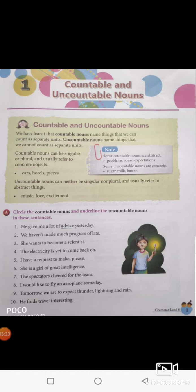She wants to become a scientist. Scientists can be counted — there are many scientists, there are two scientists in the room. So scientist is a noun here and it can be counted, so you have to circle it.